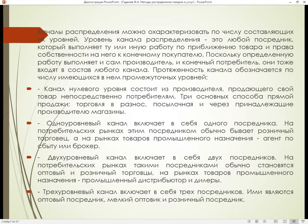Каналы распределения можно охарактеризовать по числу составляющих их уровней. Уровень канала распределения – это любой посредник, который выполняет ту или иную работу по приближению товара и права собственности на него к конечному покупателю. Протяжённость канала обозначается по числу имеющихся в нём промежуточных уровней. Канал нулевого уровня состоит из производителя, продающего свой товар непосредственно потребителям. Одноуровневый канал включает одного посредника, двухуровневый – двух, трёхуровневый – трёх посредников: оптовых посредников, мелких оптовиков и розничных посредников.